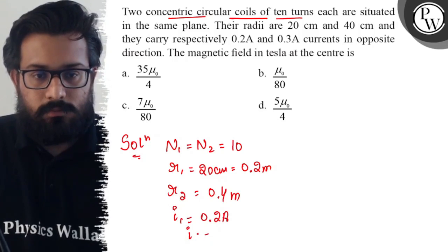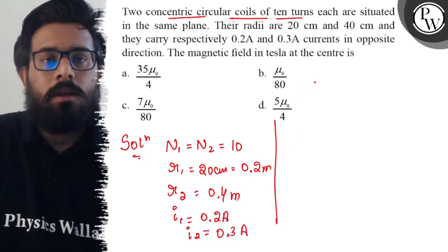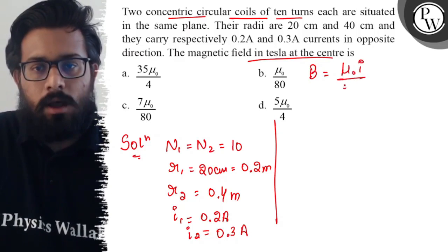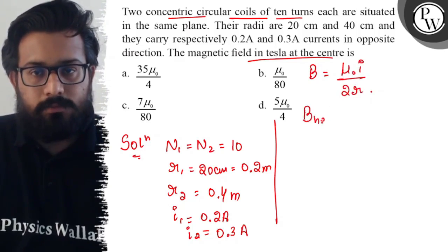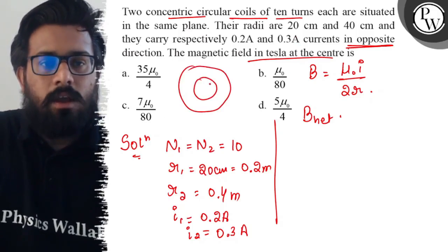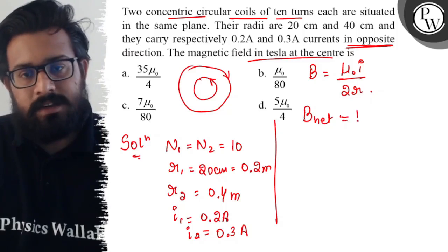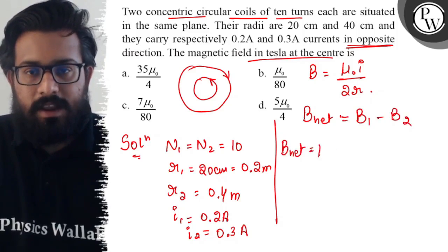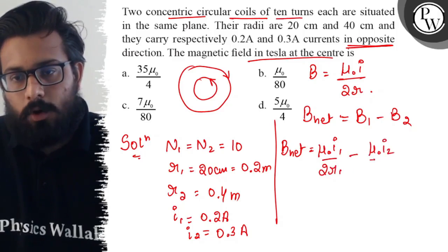Current in the second part i₂ is 0.3 ampere. Now let's solve this part. The magnetic field at the center, we know the formula is μ₀i/2r, right? For the center part we have the direct formula μ₀i/2r. So if we talk about the B_net and the currents are in the opposite direction, we have two concentric circles. In such case when currents are in opposite directions, B_net comes out as B₁ minus B₂. So B_net comes out as μ₀i₁/2r₁ minus μ₀i₂/2r₂.